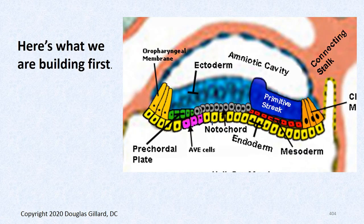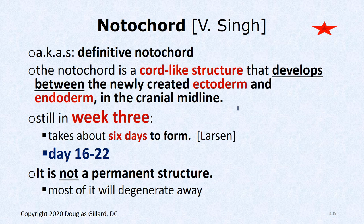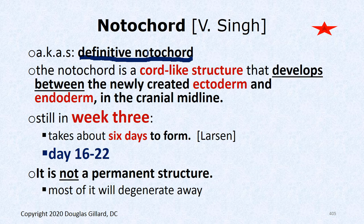Formation of the notochord — here's what we're building. The first step is making a nodal chordal process. Then we build what's called the definitive notochord, which is the mature notochord. The definitive notochord means we've completed the hollowing-out process. The notochord is a cord-like structure that develops between ectoderm and endoderm in the midline. In a mid-sagittal cut you'll see it; in a parasagittal cut you won't.